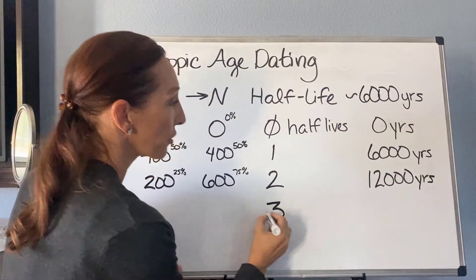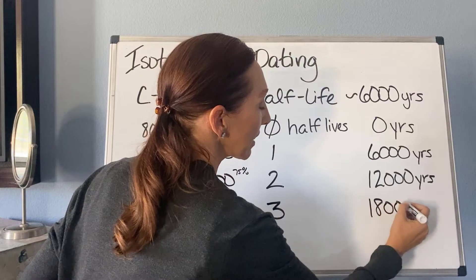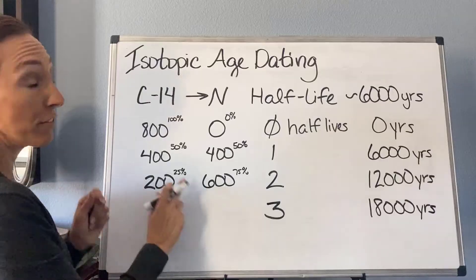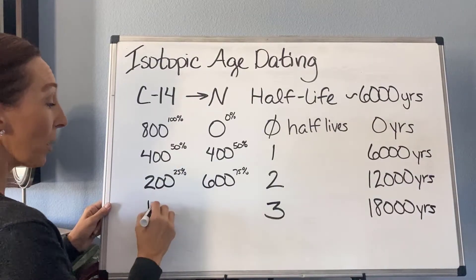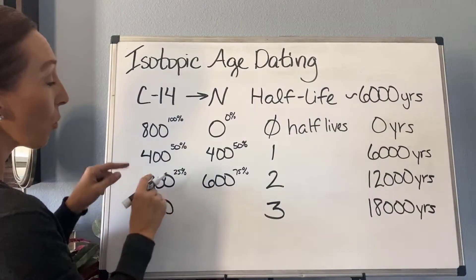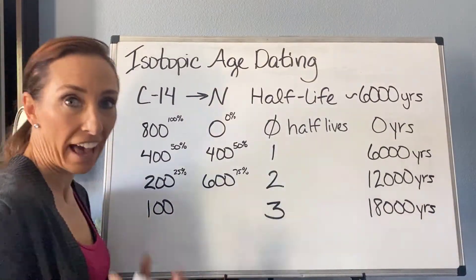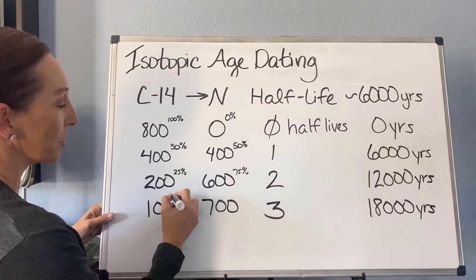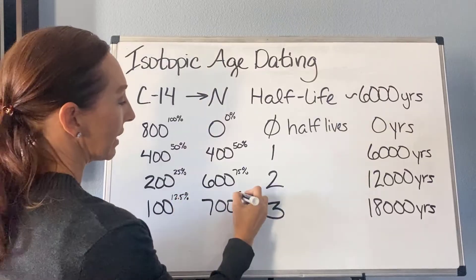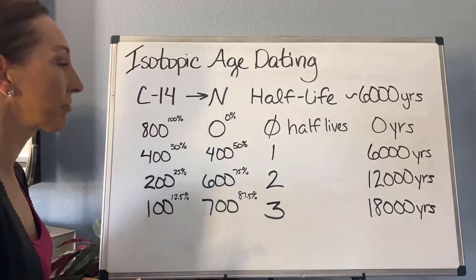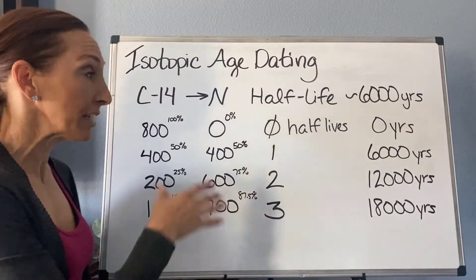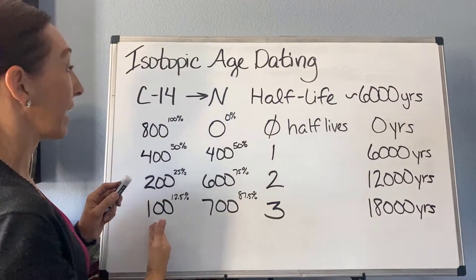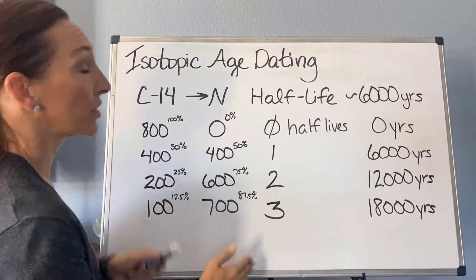After three half-lives — a total of 18,000 years — we split again. I have 200 left, so 100 remain and 100 convert and get added to the nitrogen pile, making it 700. That's about a 100-to-700 split, which is a 12.5% to 87.5% split. You can continue doing that, and as time increases and the number of half-lives increases, our parent isotope — carbon — converts to the daughter product.